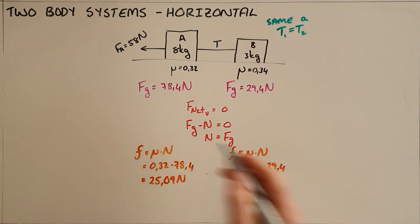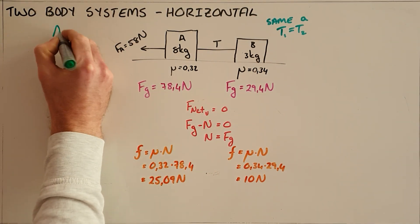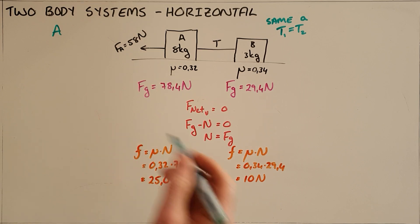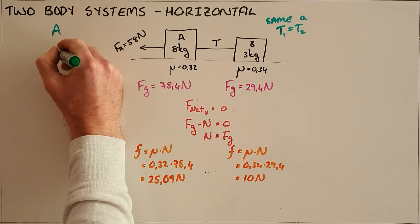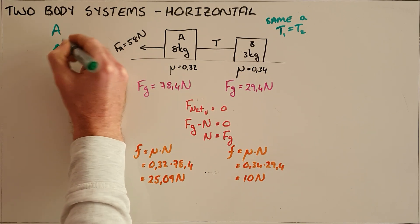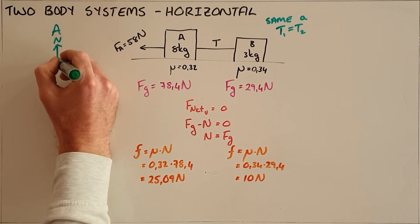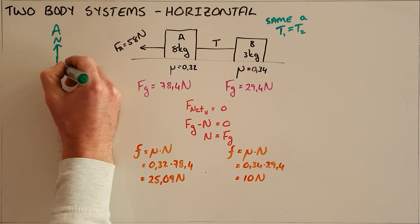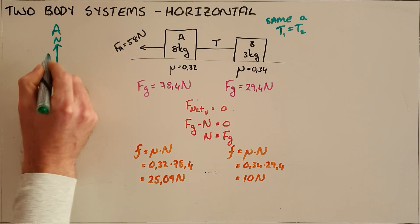In order to help us visualize this, we always start by drawing a free body diagram for each object. We know that there is always a normal force acting on that object and a force of gravity pulling the object downward.